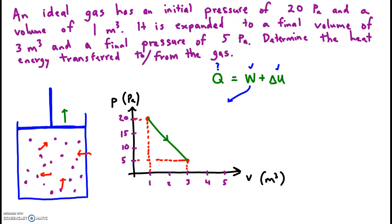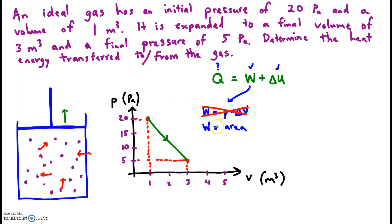There are two ways to get work. The first equation says take the fixed pressure and multiply by the change in volume. The second says get the area under the PV graph. Which one of those approaches can we use here? Well, we can't use the first because there is not a fixed pressure — the pressure is changing, it's dropping. So let's find the area under the graph.